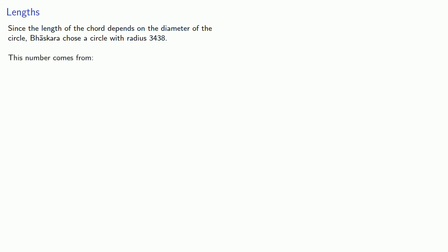This number might seem to be a little bit arbitrary, so let's take it apart. This number actually comes from the following process. If we let one minute of arc be equal to one linear unit, then the circumference of the circle is 360 degrees times 60 minutes of arc per degree, 21,600.